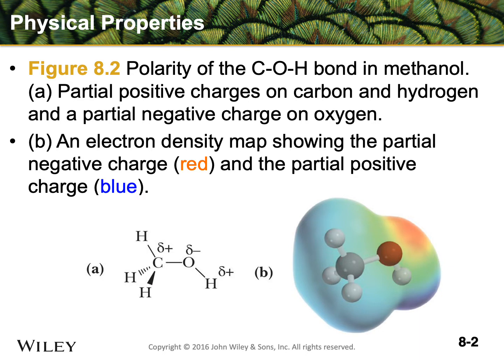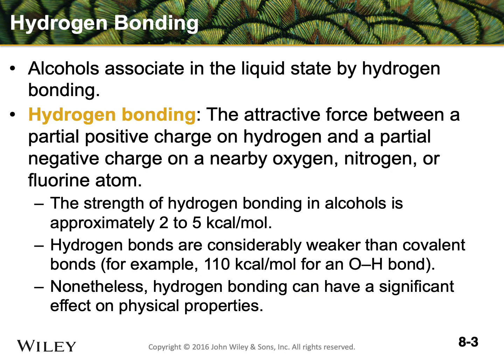First and foremost, the polarity between the carbon-oxygen-hydrogen bond makes it have a partially positive charge on the carbon and the hydrogen, and a partially negative charge on the oxygen. If we look at the electron density map, it shows the partial negative charge as red and the partial positive charge as blue. What this means is that we now have a hydrogen that can partially bond to oxygen on a nearby molecule. That bonding association is called hydrogen bonding.